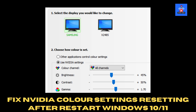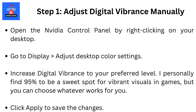Step 1: Adjust digital vibrance manually. Open the NVIDIA control panel by right-clicking on your desktop. Go to Display, then Adjust Desktop Color Settings, and increase digital vibrance to your preferred level. I personally find 95% to be a sweet spot for vibrant visuals in games, but you can choose whatever works for you. Click Apply to save the changes.